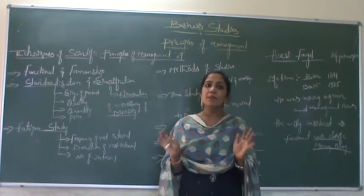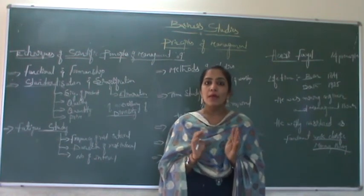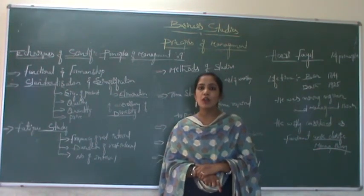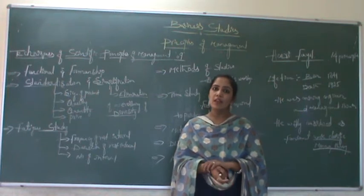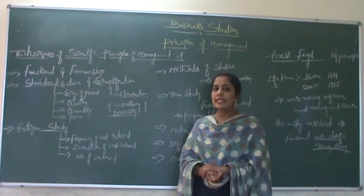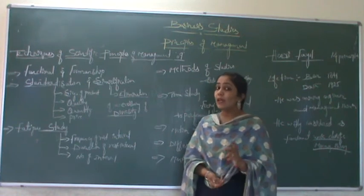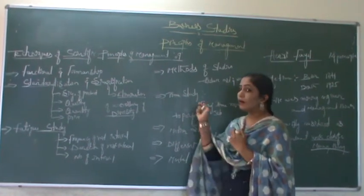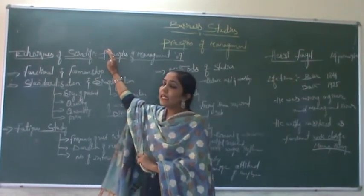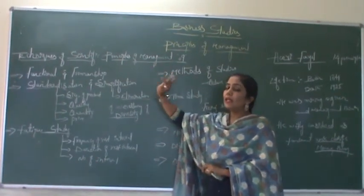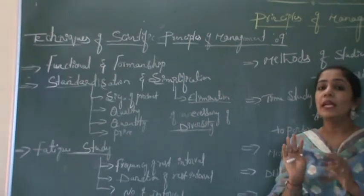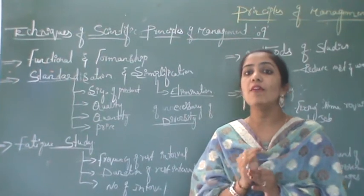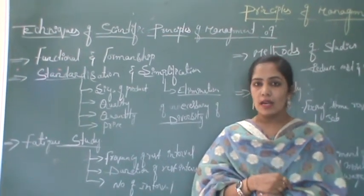The scientific principle is purely focused on the production level of the organization, and is based on truth, facts, and figures. Now let's discuss the 14 principles. After understanding the four principles, let's go on to discuss about the techniques given by F.W. Taylor. Taylor provided nine scientific techniques to improve the productive efficiency of the organization.